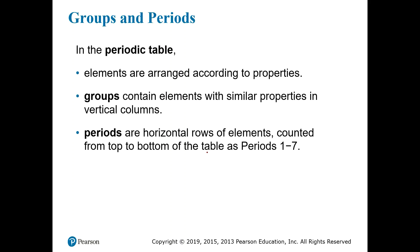These groups which contain elements with similar properties evolved into the columns that we know today in the periodic table. When we talk about the group in a periodic table we're referring to a vertical column. When we talk about the periods of the periodic table we're talking about a horizontal row.